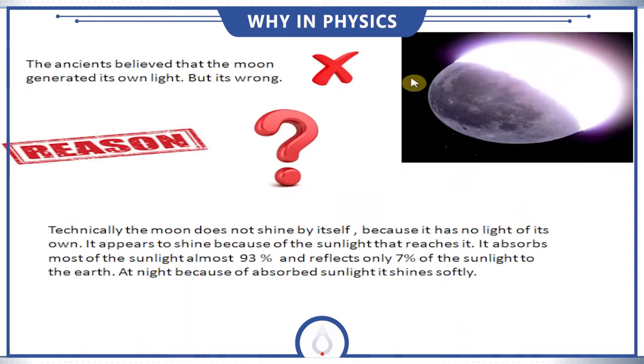The ancients believed that moon generated its own light, but it's wrong. The old people were saying that moon shines because of its own light, but that's wrong. What is the reason behind that?